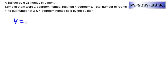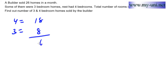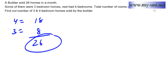Four-bedroom houses sold equals 18 and three-bedroom houses equals 8. The total should be 26 — and indeed, 18 plus 8 equals 26 homes. Thank you very much.